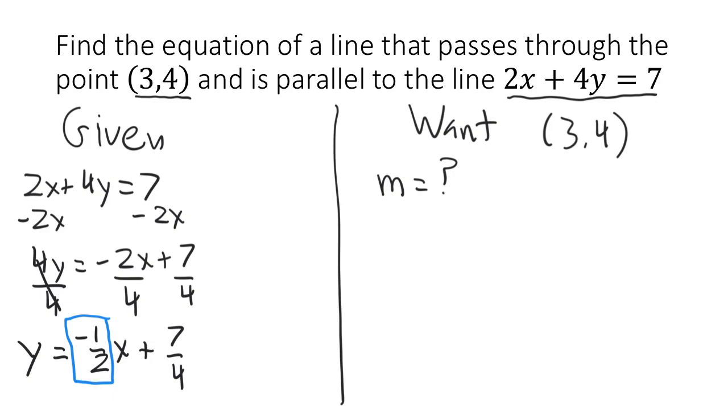Since our lines are parallel, they must have the same slope, and so now we know that the slope of the line we want is also negative 1 half.